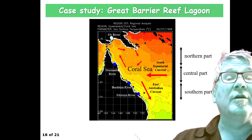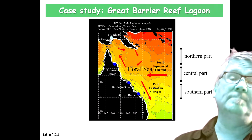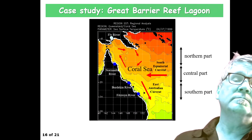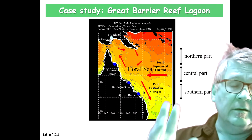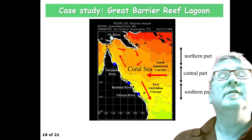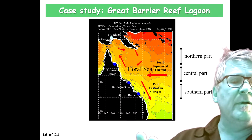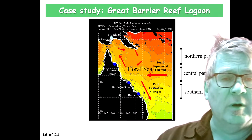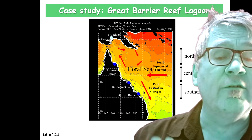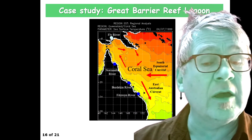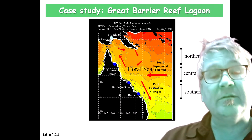Here's the case study: the Great Barrier Reef Lagoon. You heard about coral bleaching and heatwaves. Let's have a look at the Great Barrier Reef — you might think there's just one, but it actually stretches over quite a distance. We're talking more than a thousand kilometers.